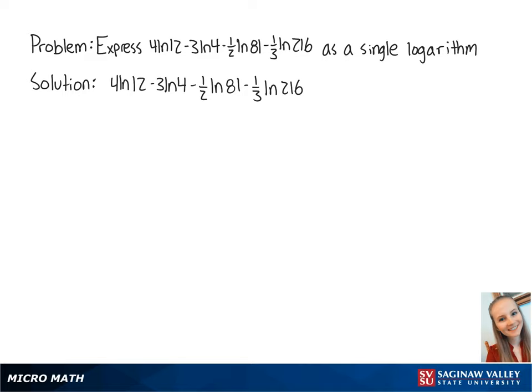For this problem, we want to express 4 times the ln of 12 minus 3 times the ln of 4 minus 1 half times the ln of 81 minus 1 third times the ln of 216 as a single logarithm.